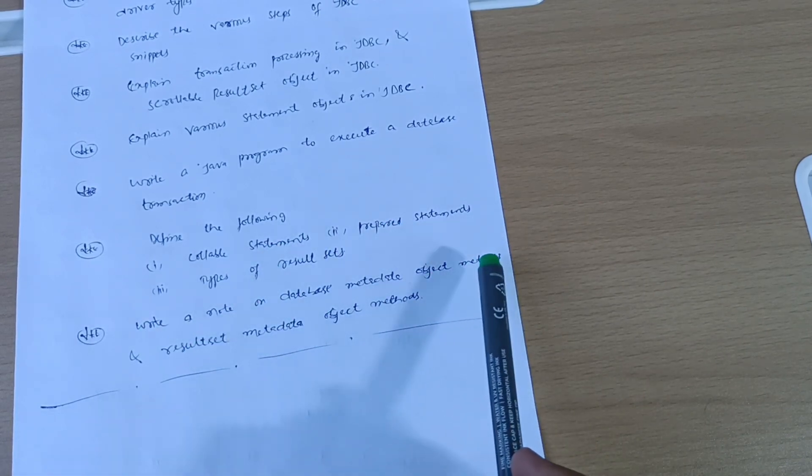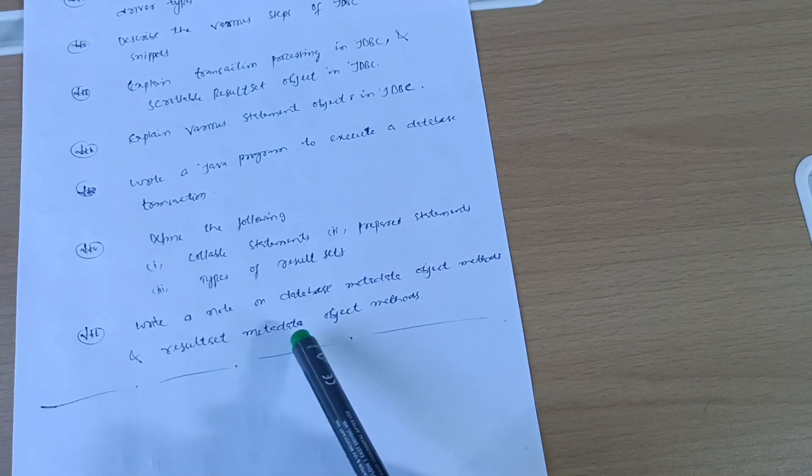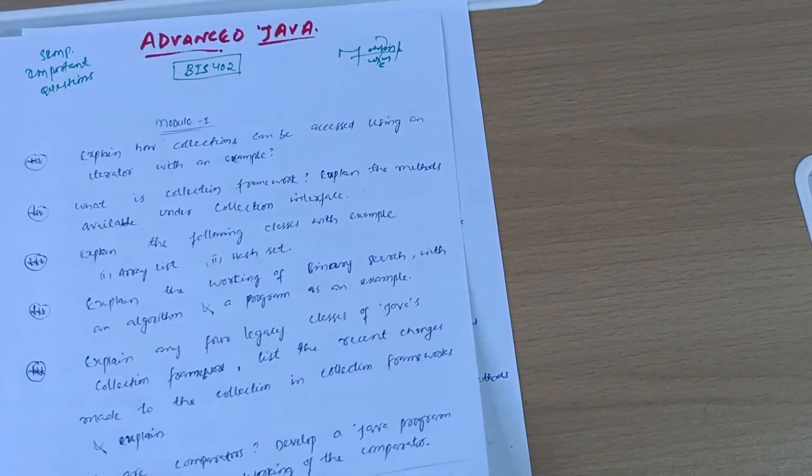Write a note on database metadata object methods and result set metadata object methods. These are all super important questions from the subject Advanced Java BIS402.